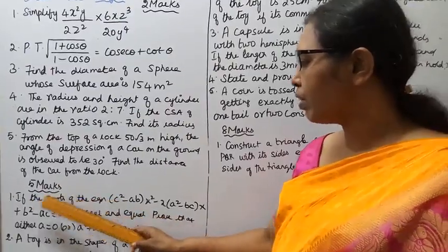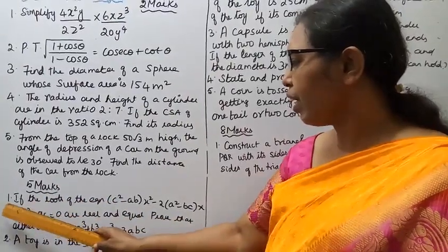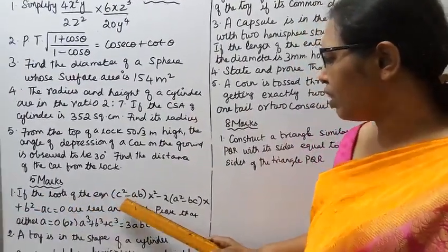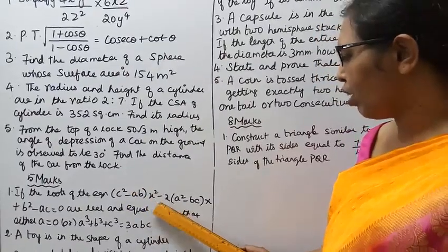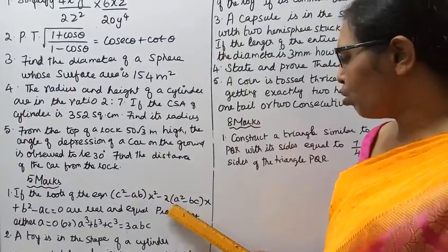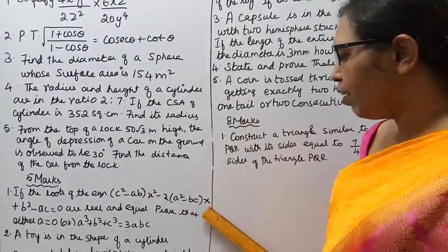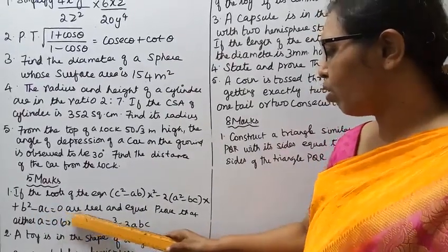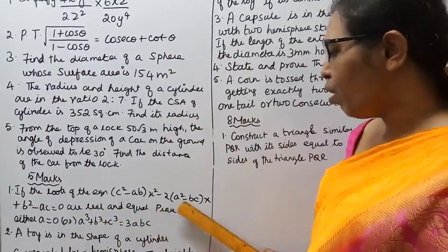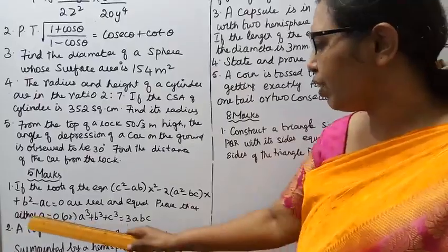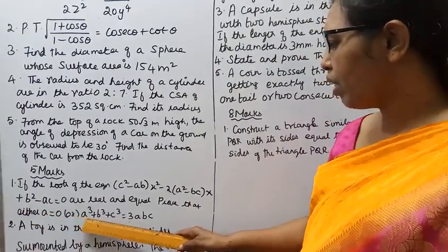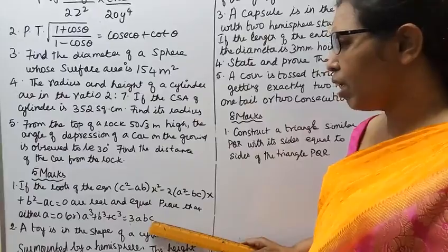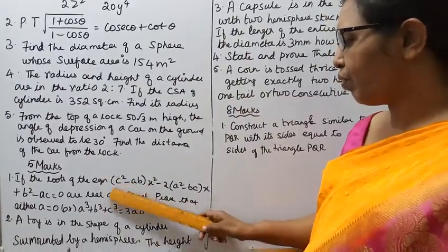First 5-mark question: if the roots of the equation (c² − ab)x² − 2(a² − bc)x + (b² − ac) = 0 are real and equal, prove that either a = 0 or a³ + b³ + c³ = 3abc. This involves the nature of the roots.